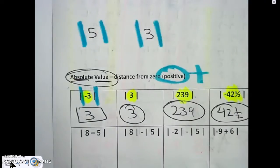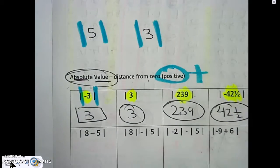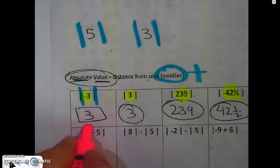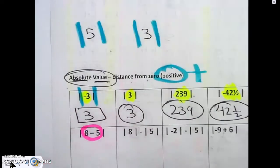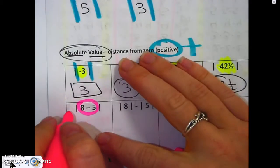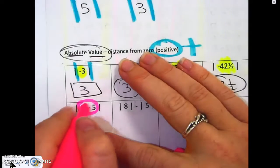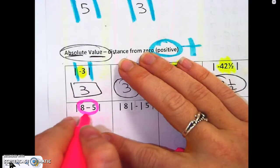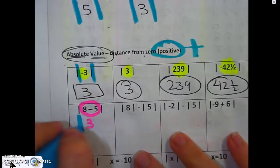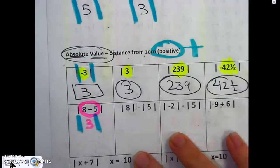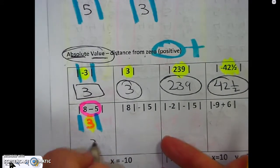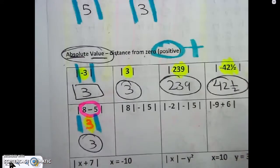Now the second row is a little bit different because what you see is two numbers inside the bars. So you have to take care of everything that's in there first. So you go eight minus five, which is three. And now you have the absolute value of three — make it positive.